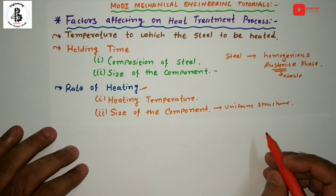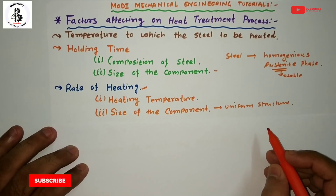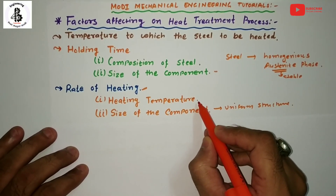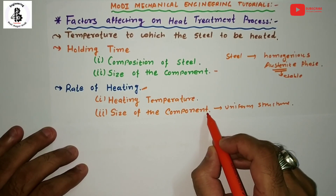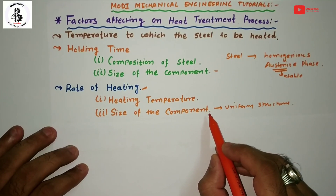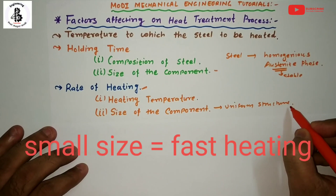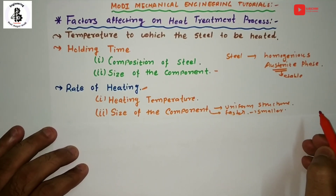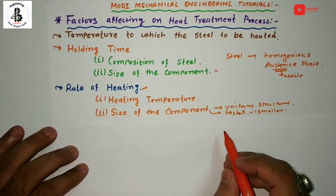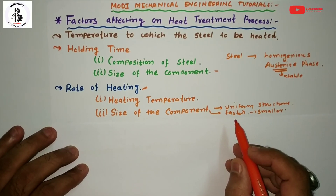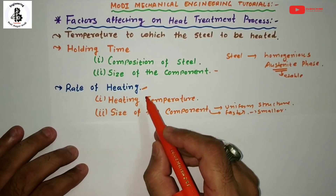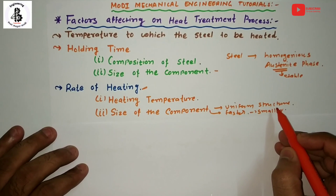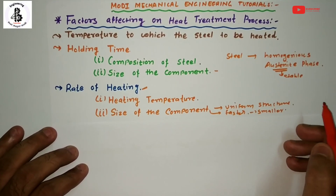After getting the uniform structure, fast heating is done to reach the high temperature. Our basic objective is to restrict the exposure time of the components at a higher temperature. The second factor for rate of heating is the size of the component. If the component size is smaller, then the heating rate should be faster. For large size components, slow heating is preferred to obtain uniform heating and thereby a uniform structure. The basic requirement is stable, uniform austenite at higher temperature for any kind of component.